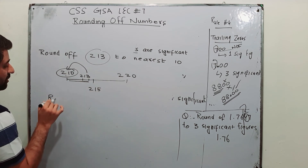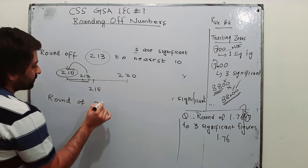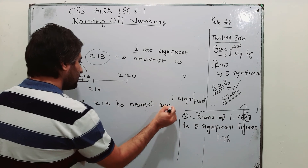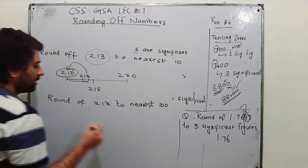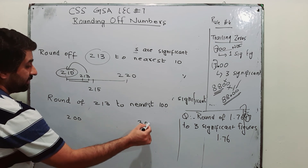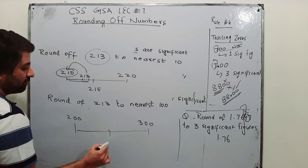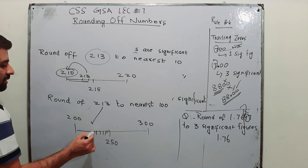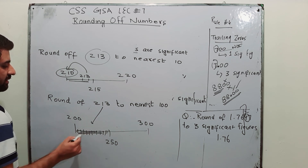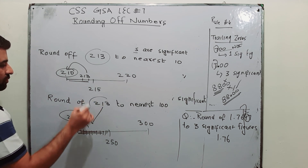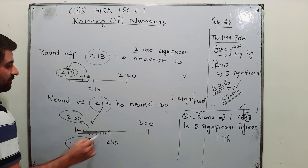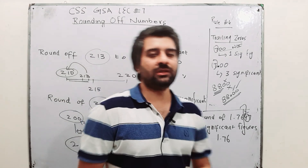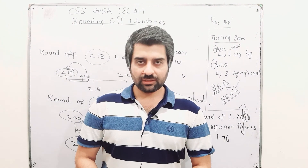Similarly, round off 213 to the nearest 100. 213 lies between 200 and 300, and the midpoint is 250. Since 213 is below 250, it falls in the lower section and is rounded off to 200. So 213 rounded to the nearest 100 is 200. That is the concept. If you have any inquiry, you can comment. Thank you so much.